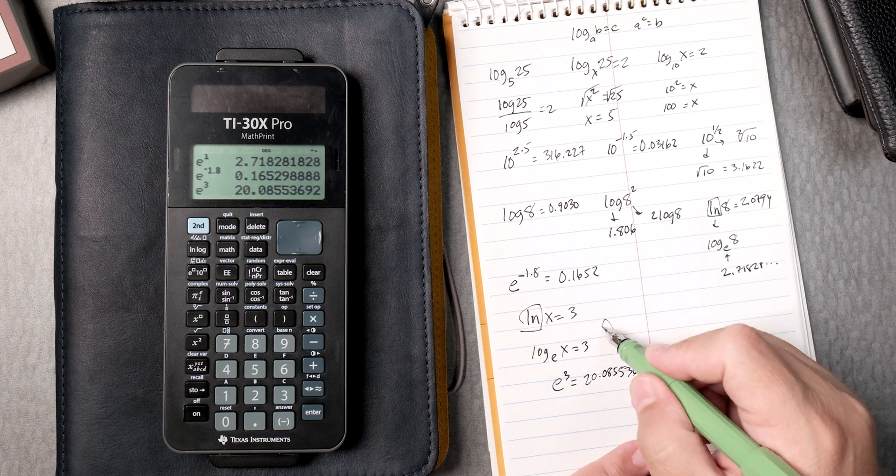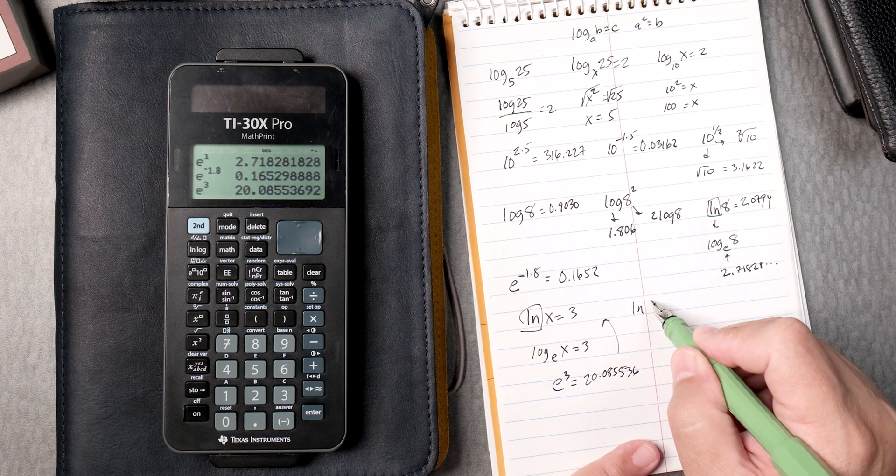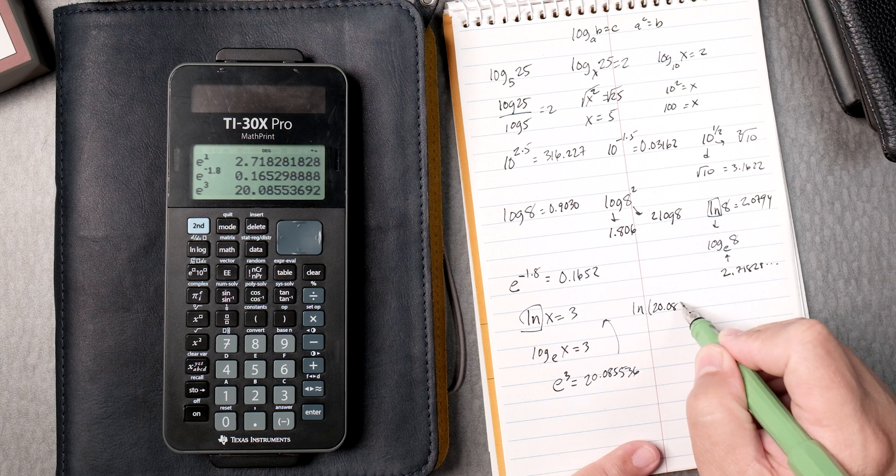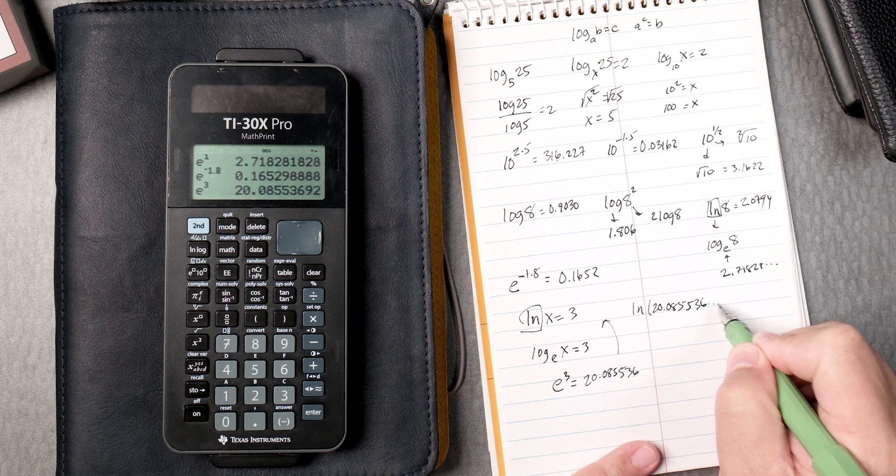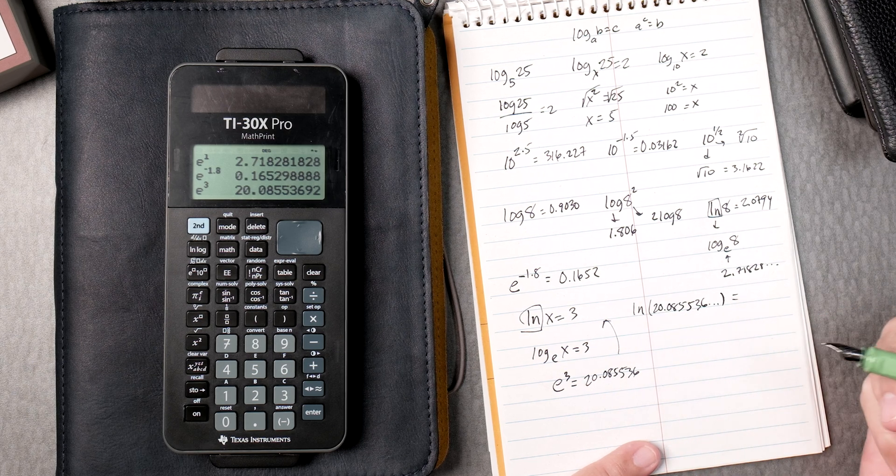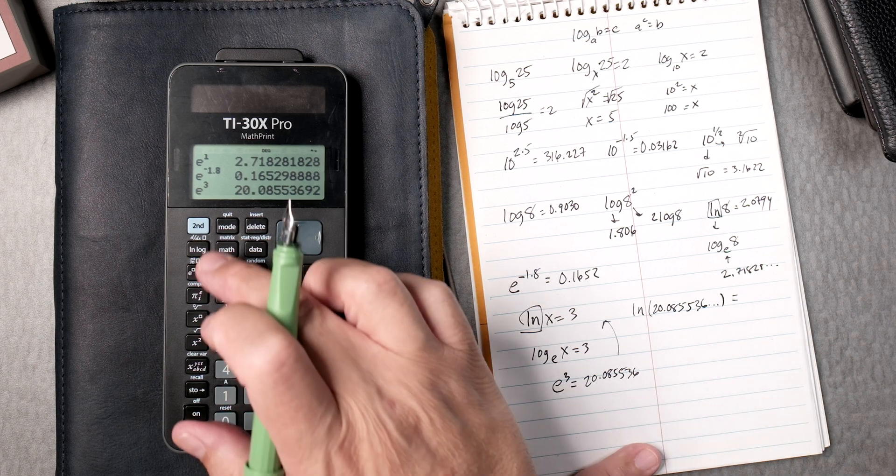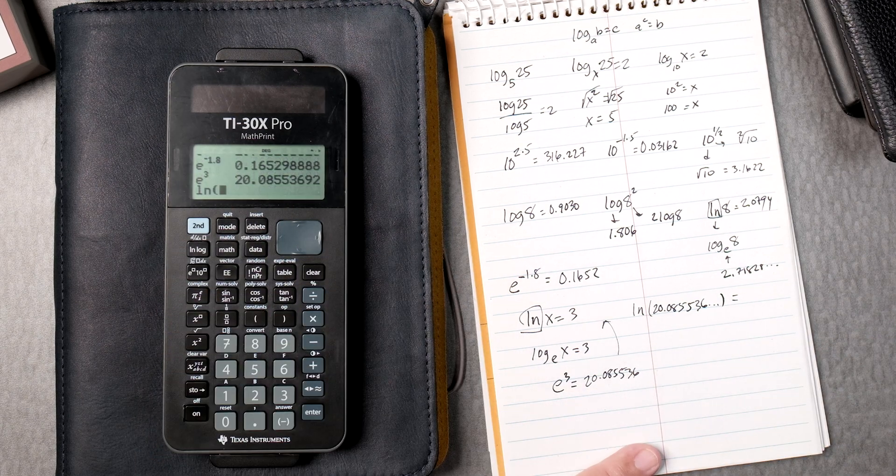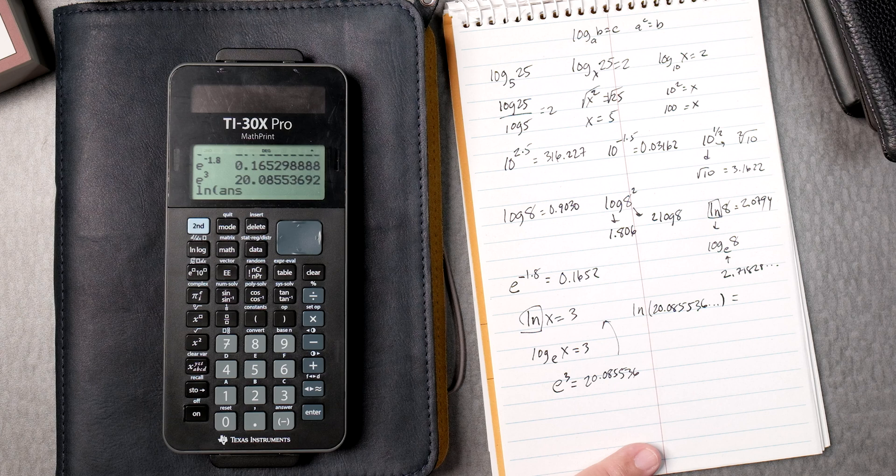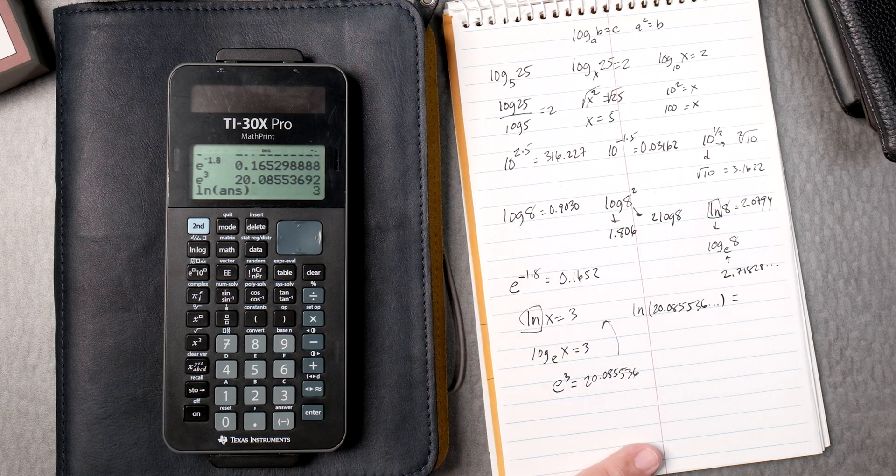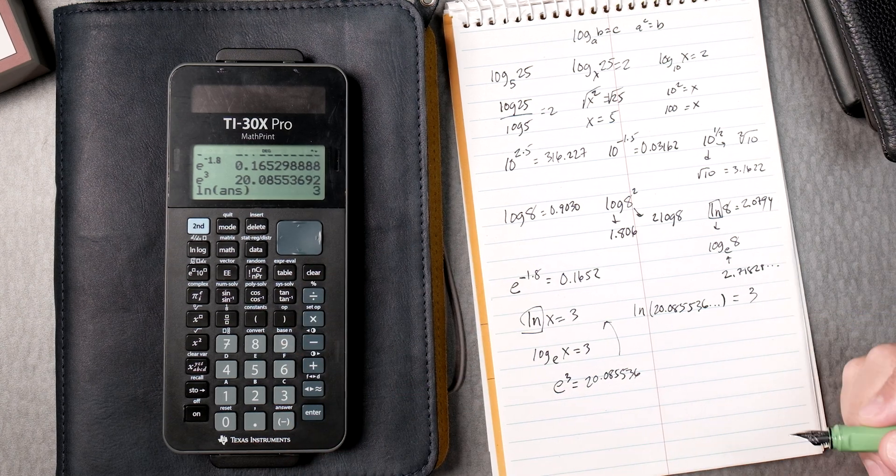And if you do this, the log of 20.085536 keeps on going, should give you an answer of 3, right? So if you press the log of the answer, previous answer, gives you 3. That makes sense.